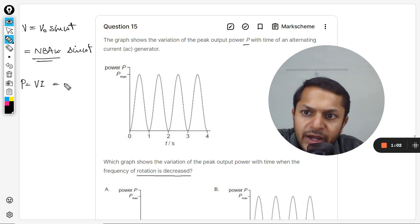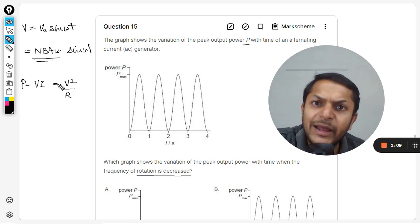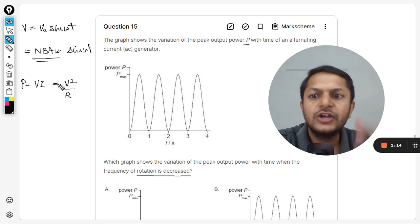The power will be the product of V into I, or clearly we can say V squared by R because we do not want to find the current now. So we can use V squared by R instead of commenting on current. Although even that will be the same thing: I will be equal to V by R.